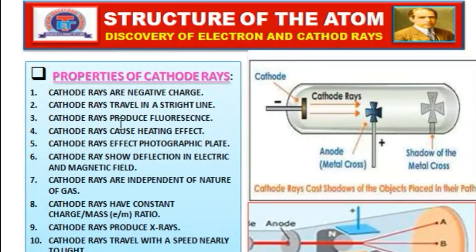Now I'm going to explain the properties of cathode rays. This is very important because these properties help us understand the actual properties of electrons. We'll explain the properties of cathode rays one by one.